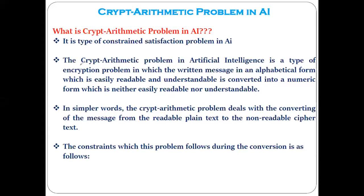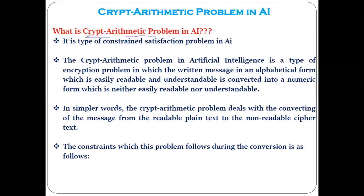Today we are going to discuss one more problem that comes under the category of constraint satisfaction — that is cryptarithmetic. The problems solved in this unit include the block code puzzle, N-Queens, graph coloring, and water jug problems. Questions on these topics are asked in competitive exams, and specifically for campus interviews — for example, Infosys always asks questions on cryptarithmetic and water jug problems.